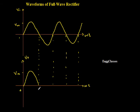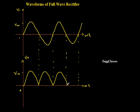During the negative half cycle, diode d2 is going to conduct and I am going to get the waveform something like this because of diode d2. During the next positive half cycle, d1 conducts again, and during the following negative half cycle, diode d2 is forward biased and I get the output due to diode d2. So this is the waveform of a full wave rectifier.